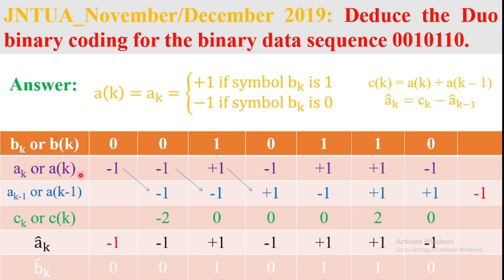Next, calculate the delayed version signal a(k-1), which is the previous sample value. The a(k) sequence is shifted to the right by one sample. So the delayed version a(k-1) is: -1, -1, +1, -1, +1, -1.